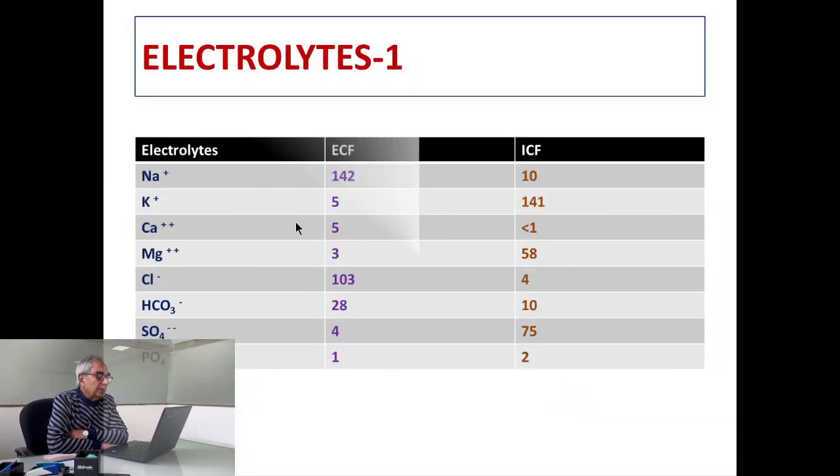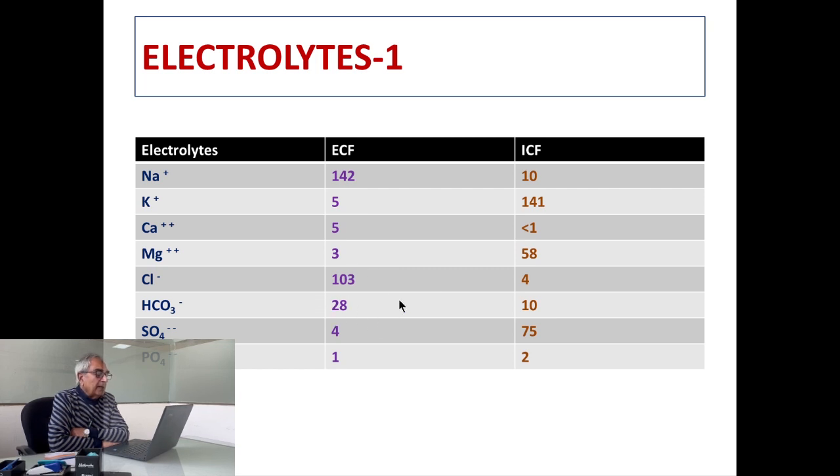As far as electrolytes are concerned, the main electrolytes in the ECF are sodium, chlorides and bicarbonates, whereas in the ICF the main electrolytes are potassium, magnesium and sulfate. The other electrolytes are almost equally distributed in the intracellular and extracellular compartments.